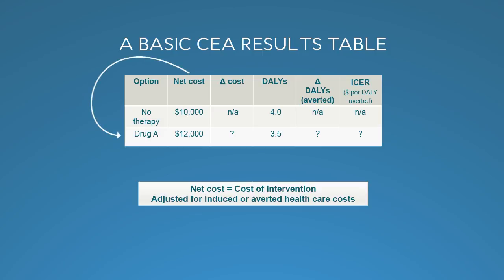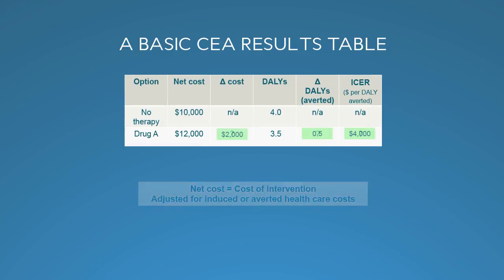Drug A increases the net costs. Maybe the drug itself costs $4,000, but it may reduce the risk of hospitalization, so the net cost is $12,000. The DALYs decrease from 4 to 3.5 — perhaps there are both small morbidity benefits and a slightly extended lifespan. In this table, we calculate the differences in costs, DALYs, and the ICER.